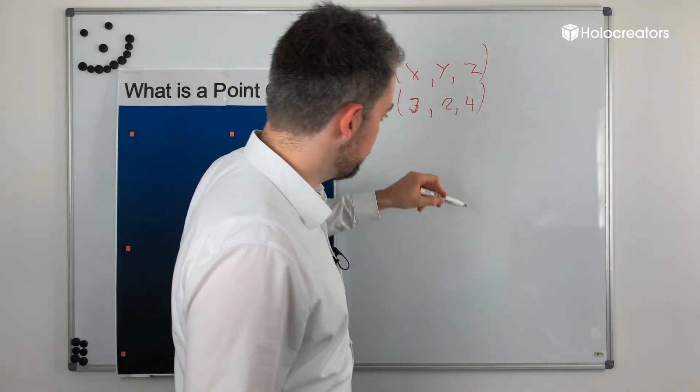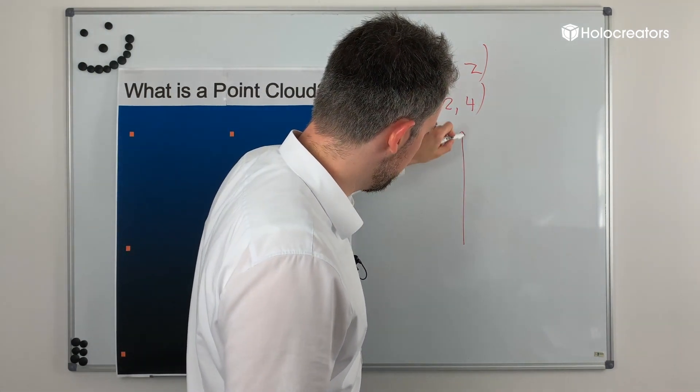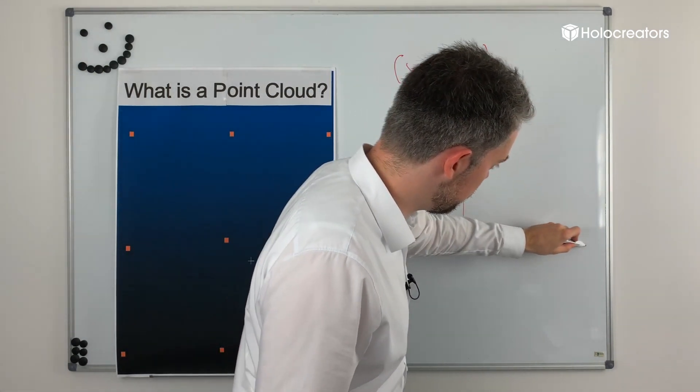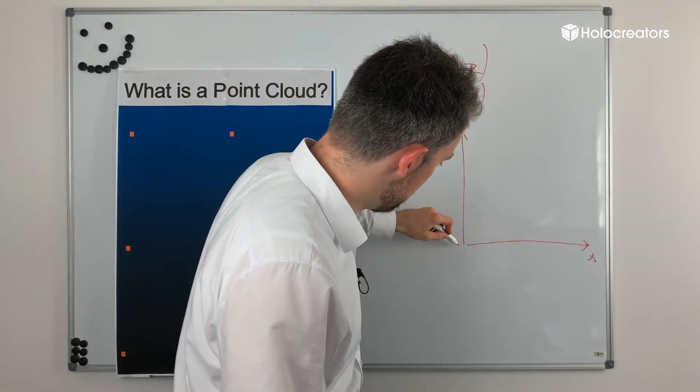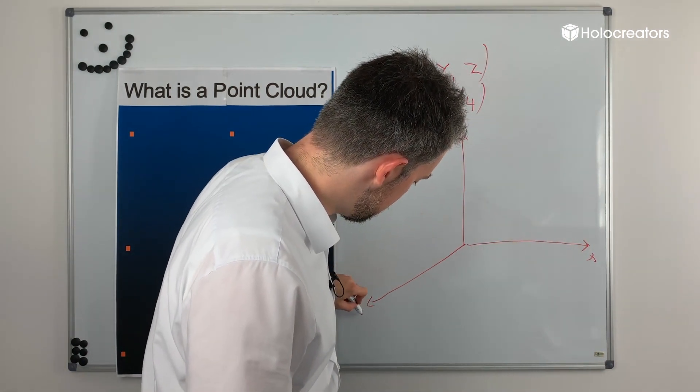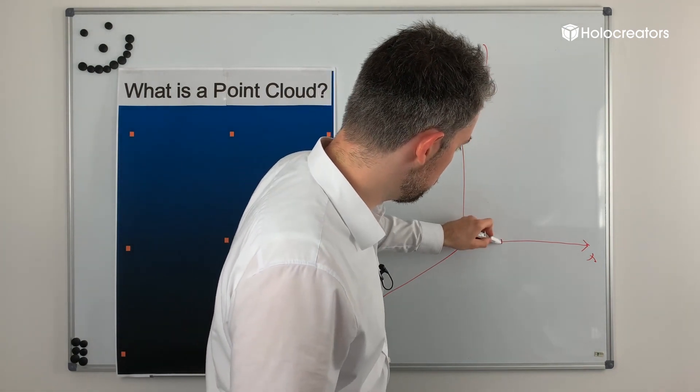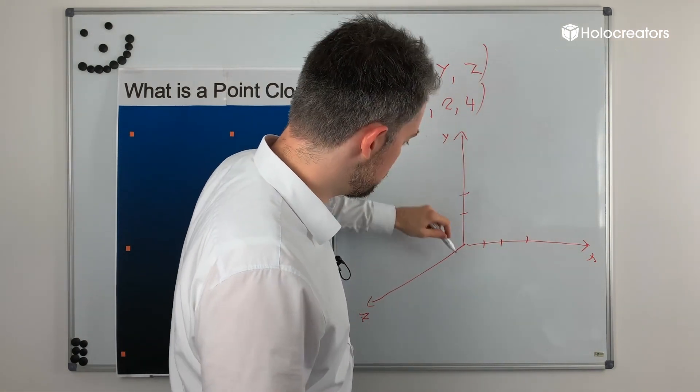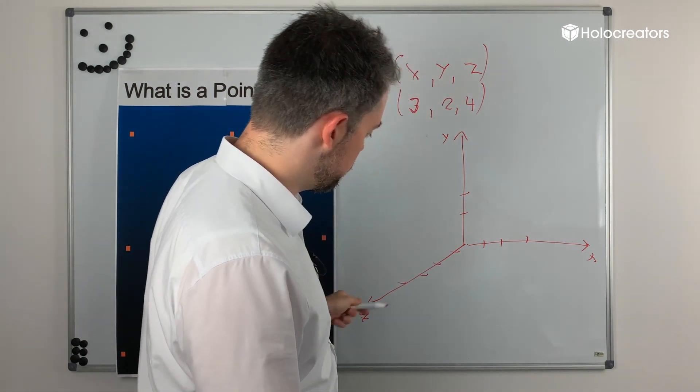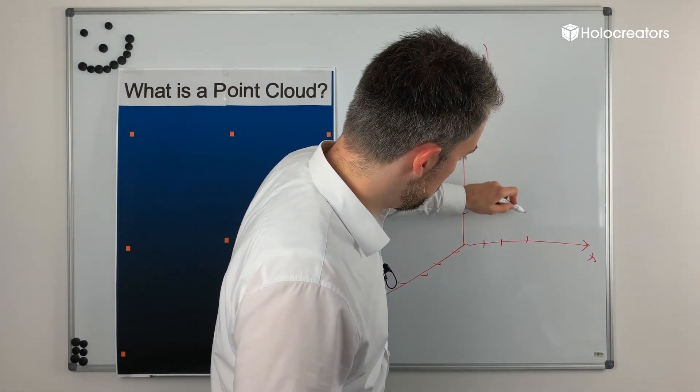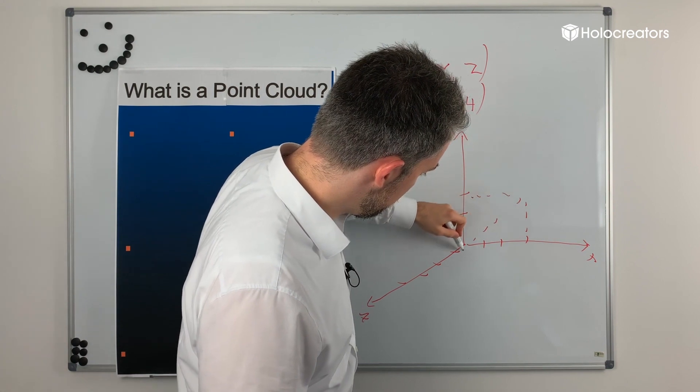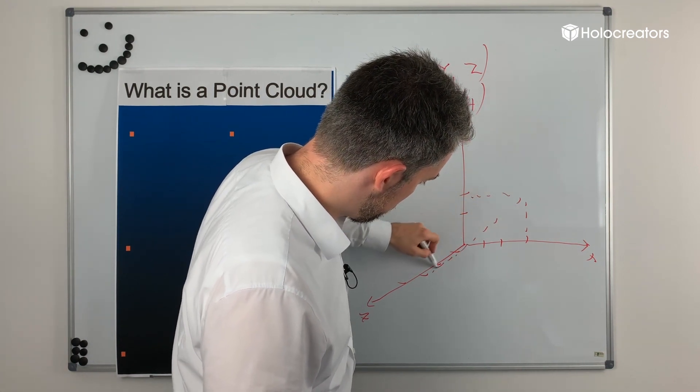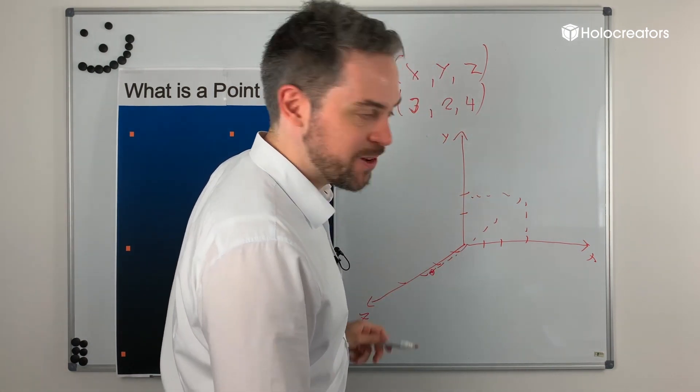Then, if we look at the coordinate system, we would have the y-axis and then the x-axis and the z-axis. So, 3 would be 1, 2, 3 on the x-axis, 2 on the y-axis and 1, 2, 3, 4 on the z-axis. And if we now plot this in 3D, yeah, probably this point would be somewhere around here.